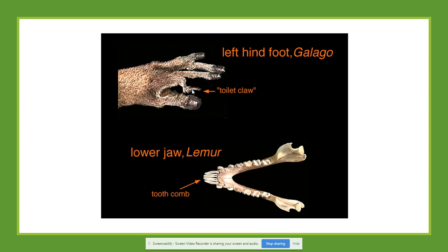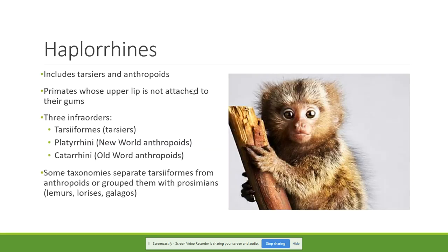Later you will see the difference between the hands of a prosimian and the hands of an anthropoid. The second group is the haplorhines, which includes the tarsiers and the anthropoids. In haplorhines, the upper lip is not attached to the gums, and because of this, haplorhines have facial expressions. There are three infra-orders within the haplorhines.